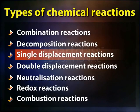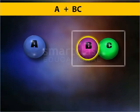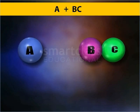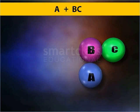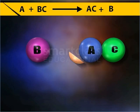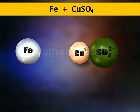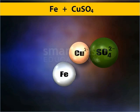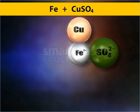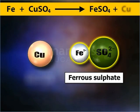Single displacement reactions are chemical reactions in which an element is displaced from its compound by another element. For example, iron displaces copper from copper sulphate to form ferrous sulphate and copper.